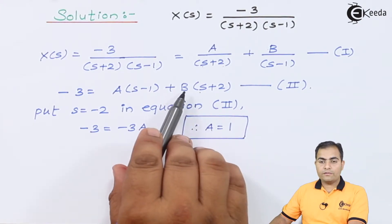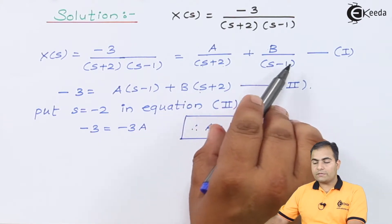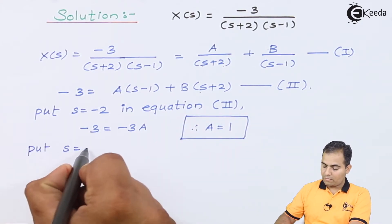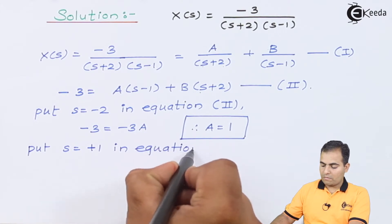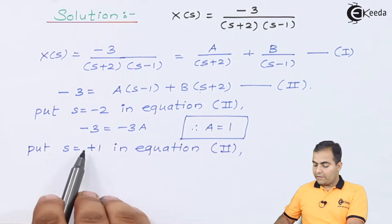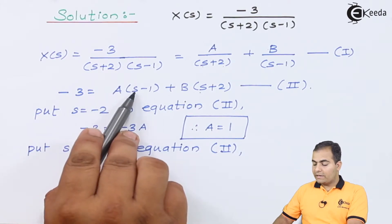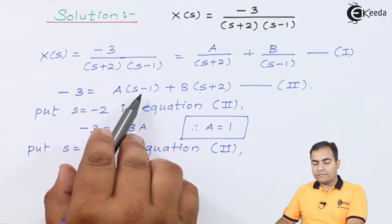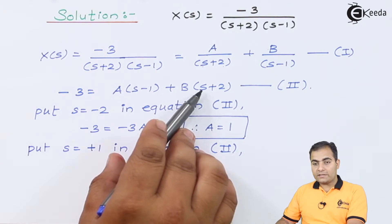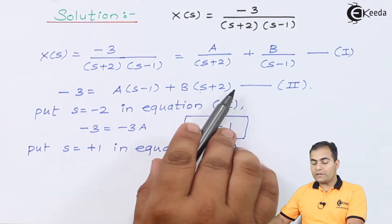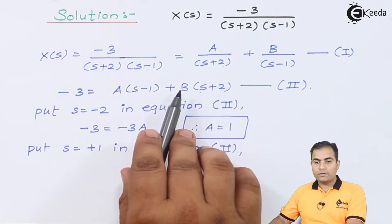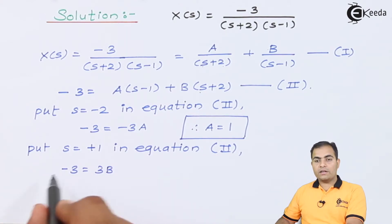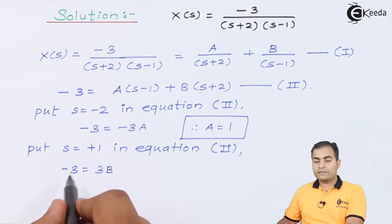Similarly, to find B, equate (s-1) = 0, giving s = +1. Substituting s = +1 into equation 2: (1-1) = 0 so the A term vanishes. For the D term, (1+2) = 3, giving -3 = 3B. Dividing both sides, 3 cancels and B = -1.